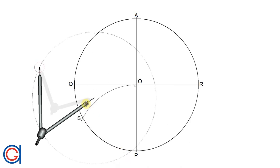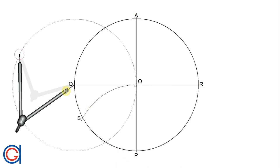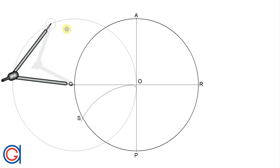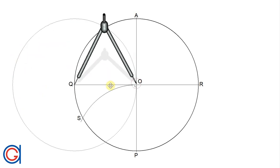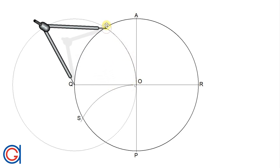Now using the same method and centering the compass on point Q with the same radius, we will describe an arc to the left until it cuts the circumference at a new point which we will call T.